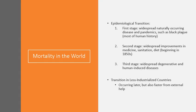The epidemiological transition is an attempt to explain the stages that countries go through with regard to leading causes of mortality. In the first stage, what we see is widespread naturally occurring diseases and pandemics. In Europe, for instance, we saw this in the 1300s when the Black Plague was rampant, and that continued for several centuries beyond that.